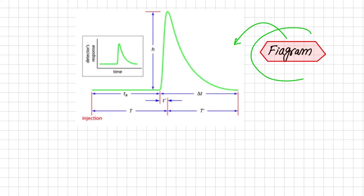This diagram explains the FIAgram, which is a plot of detector signal as a function of time. This figure represents a typical FIAgram for the condition in which both convection and diffusion contribute to sample dispersion.